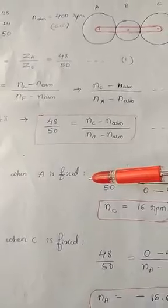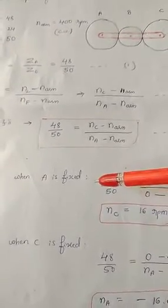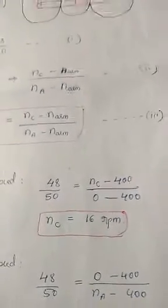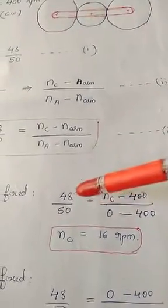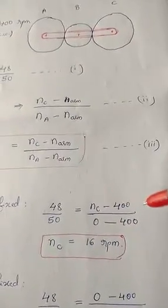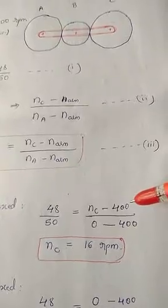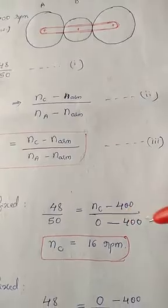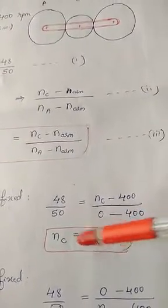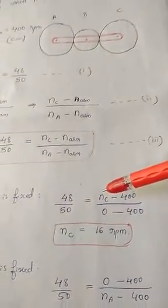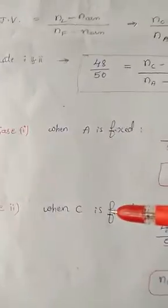Case 1: When A is fixed, find the speed of gear C. Apply the values: 48/50 = (NC − 400) / (0 − 400), since A is fixed so NA = 0 and NR = 400. Solving this gives NC = 16 rpm.